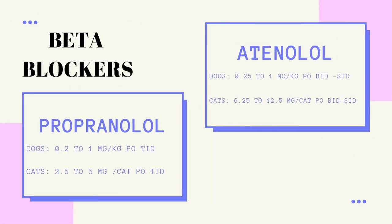Atenolol and propranolol belong to the group of medications called beta blockers. They antagonize the effects of the sympathetic nervous system and thereby slow the heart rate, reduce the heart's oxygen demand, and help to control certain heart rhythm disturbances. Beta blockers can be used with digoxin to slow the heartbeat of dogs with atrial fibrillation, and can be useful in cats with hypertrophic cardiomyopathy and in animals with certain congenital heart malformations. Individual animals vary considerably in their response to these drugs, so low doses are used initially and slowly increased to effect.